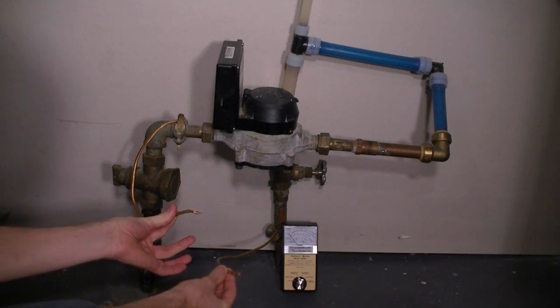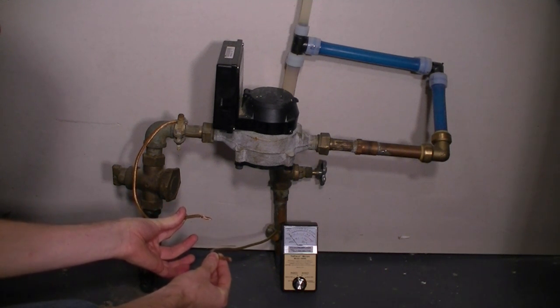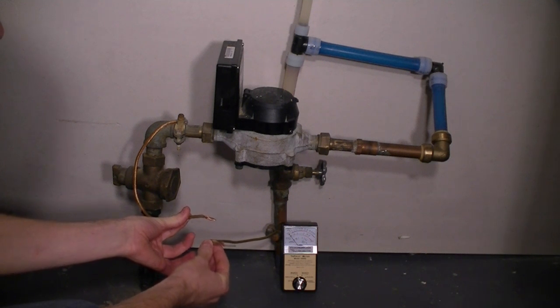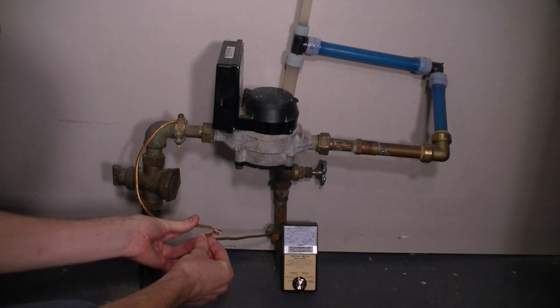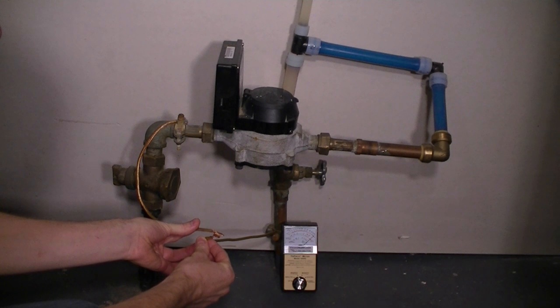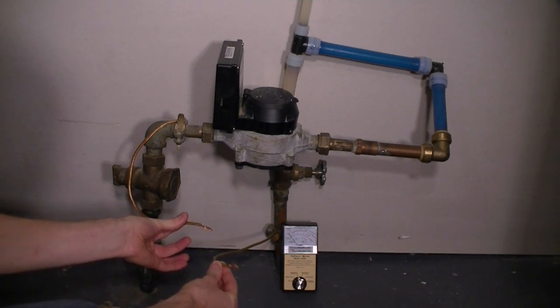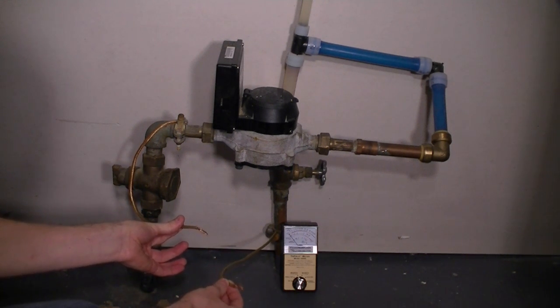As you can see, the magnetic field drops to zero or near zero, what it was in the background level. If we touch the wires, it goes back up again. Now the current's flowing. Now the current has stopped.